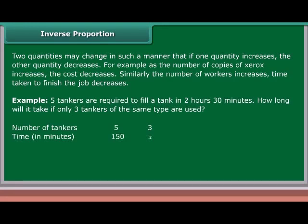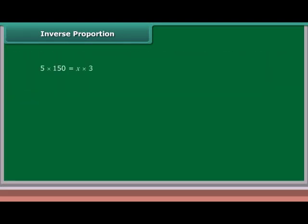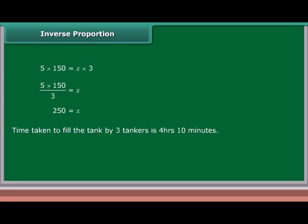Example: 5 tankers are required to fill a tank in 2 hours 30 minutes. How long will it take if only 3 tankers of the same type are used? Lesser the number of tankers, more will be the time required — so this is an inverse proportion. 5 times 150 equals x times 3, so x equals 5 times 150 upon 3, giving x equals 250 minutes. Time taken to fill the tank by 3 tankers is 4 hours 10 minutes.